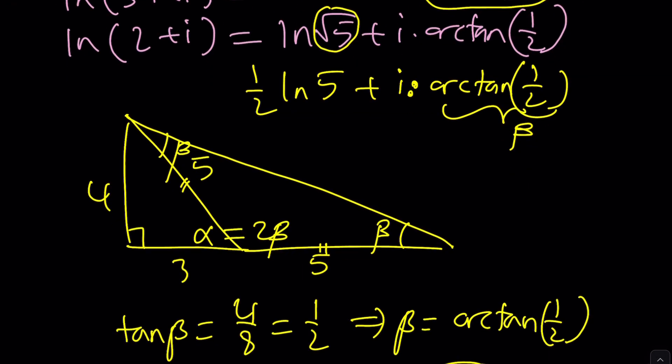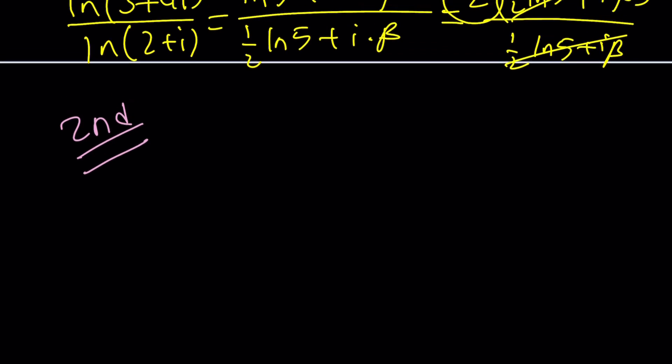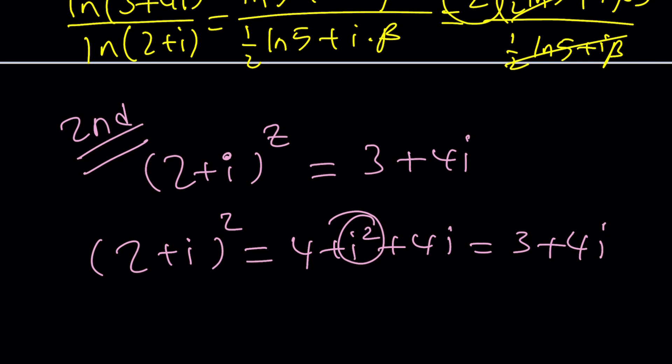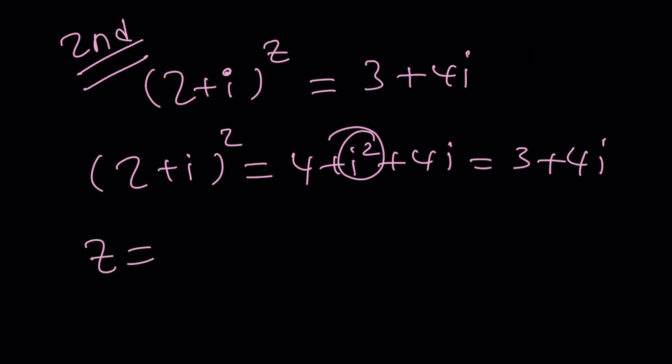Now let's go ahead and take a look at the second method because second method will make things a lot clearer. So what did we have? 2 plus i to the power z equals 3 plus 4i. Now take a look at this. If you take 2 plus i and square it, you'll get 4 plus i squared plus 4i. But i squared is negative 1. 4 minus 1 is 3. So this becomes 3 plus 4i. That means z is equal to 2. Is that the only solution? Probably. You can definitely check it out. And we kind of checked it out with the first solution, but that's pretty much it.